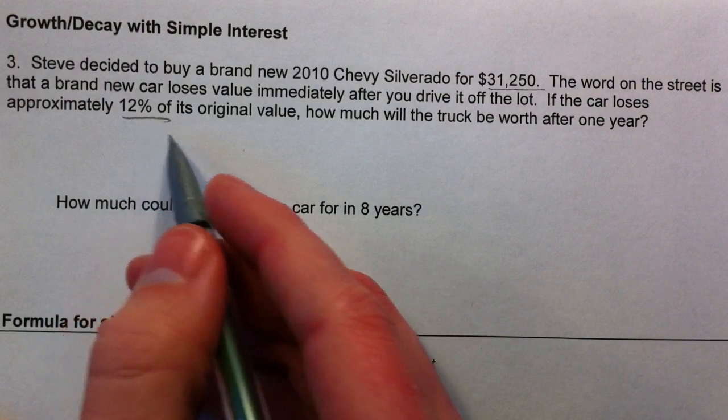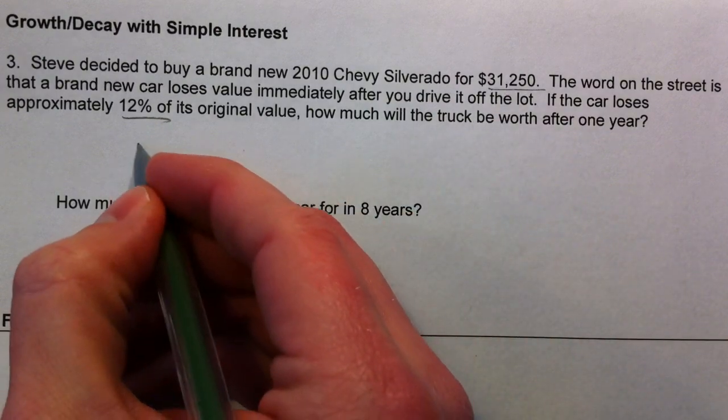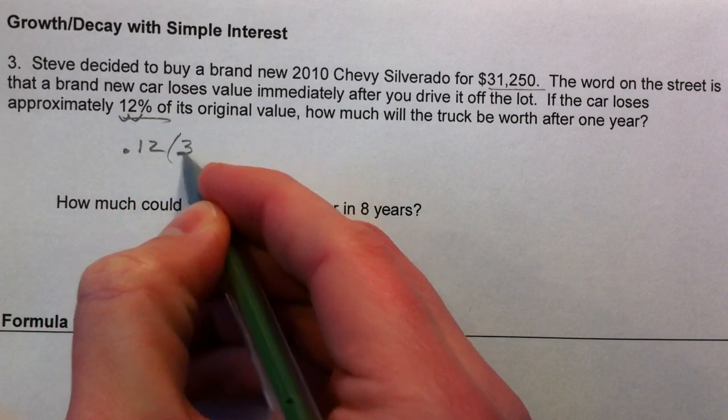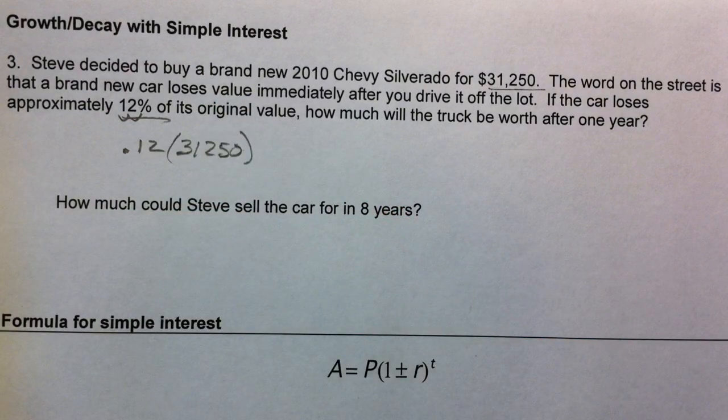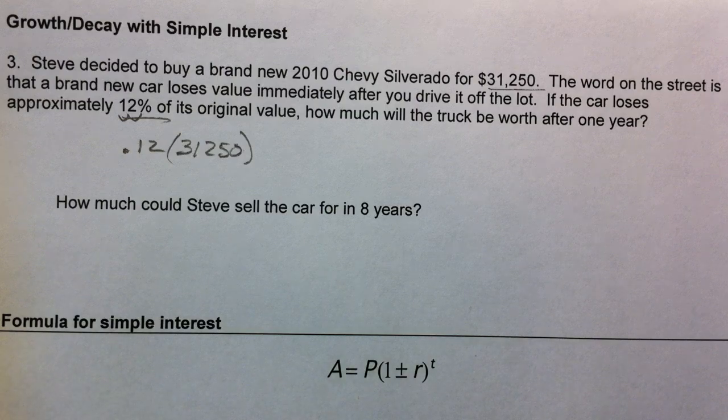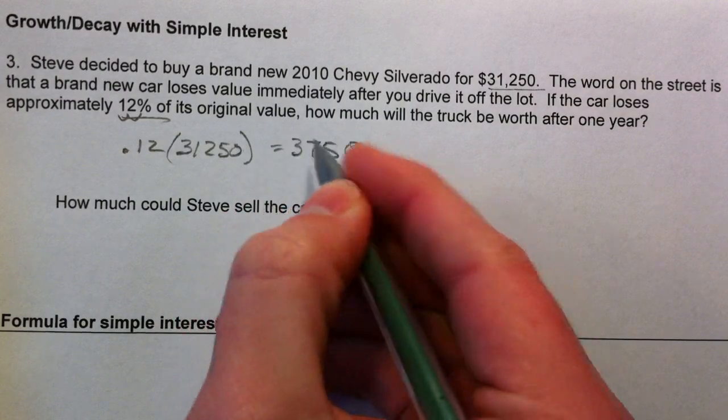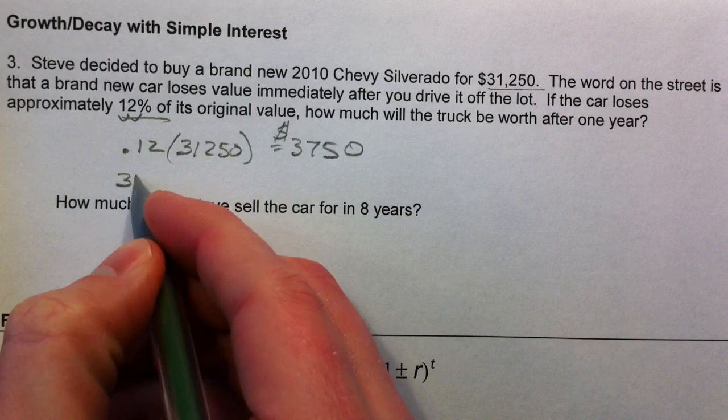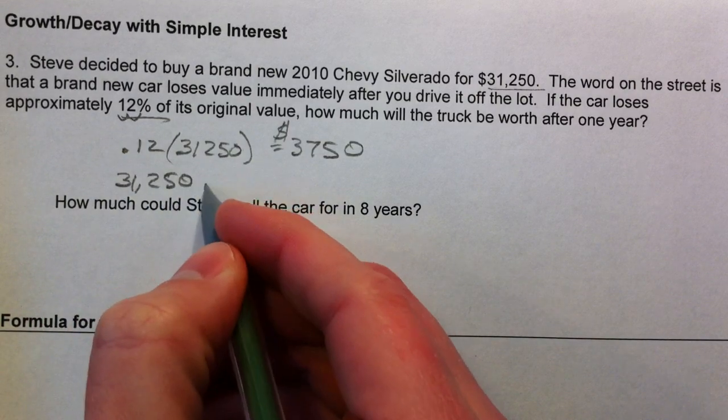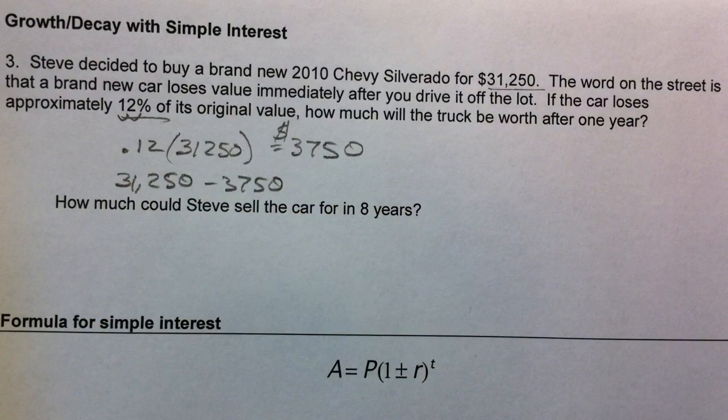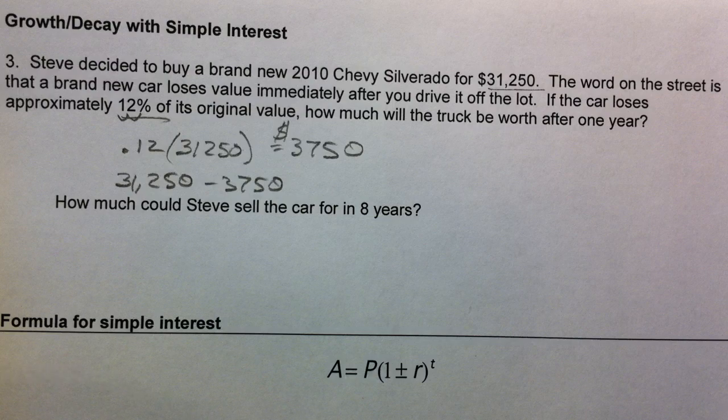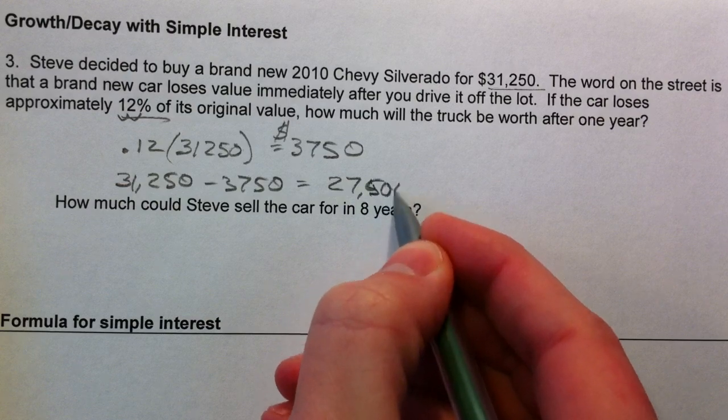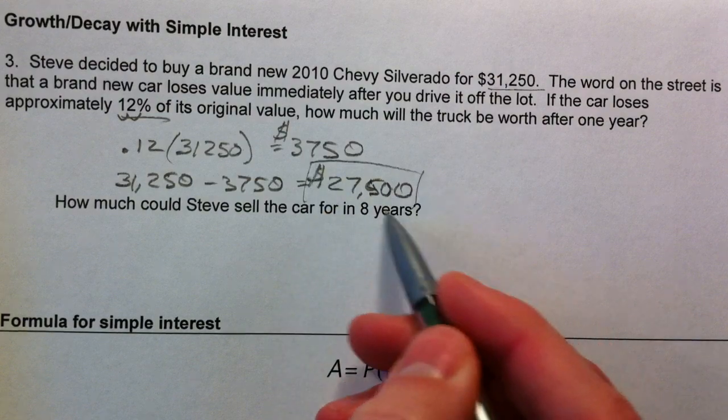So how would we do this? Well, 12% of 31,250—we usually change this 12% into 0.12 and most people would just multiply that by the 31,250. So multiply 31,250 times 0.12, and that gives you 3,750. Now that is not what the car is worth. That's 12% of it, and that's how much it lost. And so then you could just subtract 31,250 minus 3,750, and you get 27,500 dollars.